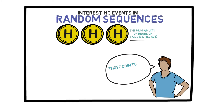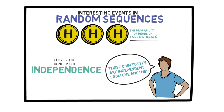This is the concept of independence. What we are saying is that if we toss a coin, it doesn't matter what the previous results were. Whether you have previously observed heads or tails, the next toss is still just as likely to be heads as it is tails. The coin does not have any memory.